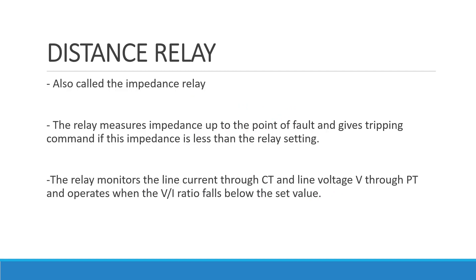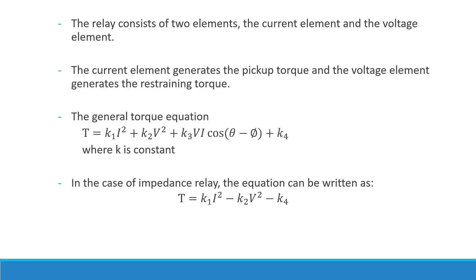Distance relays are also called impedance relays. The relay measures the impedance up to the point of fault and gives the tripping command if the impedance is less than the relay setting. This type of distance relay is mostly used for transmission overhead lines. The relay monitors the current through the CT and the voltage through the VT and operates when the V/I ratio is less than the set value.